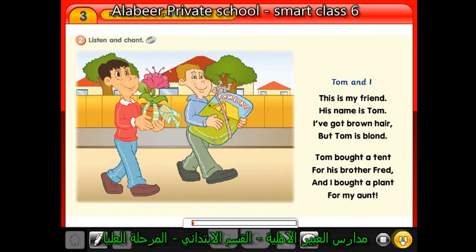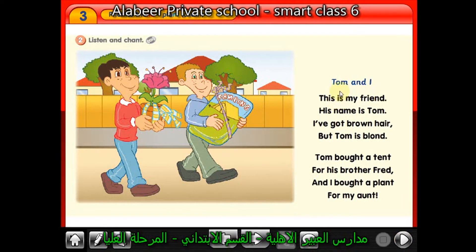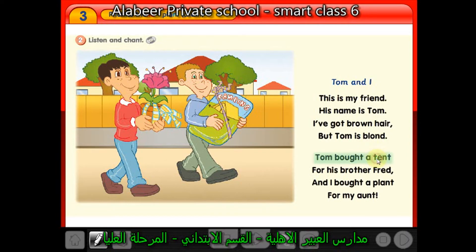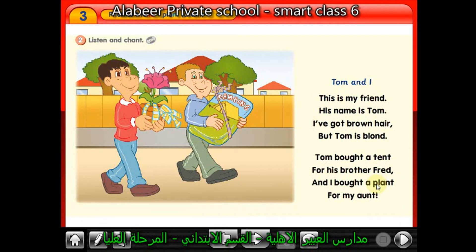Listen and chant — 'Tom and I': This is my friend, his name is Tom. I've got brown hair but Tom is blonde. Tom bought a tent for his brother Fred, and I bought a plant for my aunt. Notice: 'friend' ends in 'nd', 'blonde' ends in 'nd', 'tent' ends in 'nt', and 'plant' ends in 'nt'.